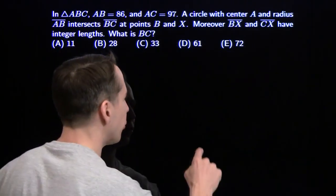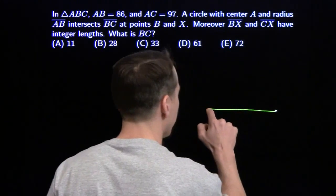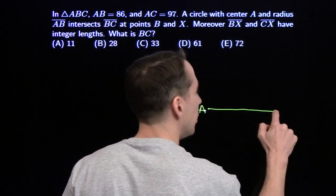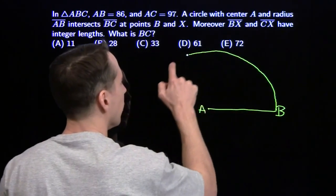I'm going to start with the circle, because circles are hard for me to draw, and once I have the circle, then maybe I can fit everything else in. So, there's AB right there, center A, radius AB, there's my circle.